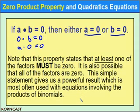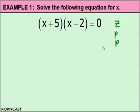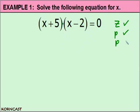Let's take a look at an example. In example one, we're going to solve the following equation for x. Recall from the zero product property that at least one of these factors must equal zero in order for this product to equal zero. To use the zero product property, a couple of conditions need to be met. First, is the equation equal to zero? This equation is equal to zero, so that condition is met. Second, is there a product in this equation? Sure enough, there's a product between the two factors. Now that those conditions have been met, we can use the zero product property to solve for x.